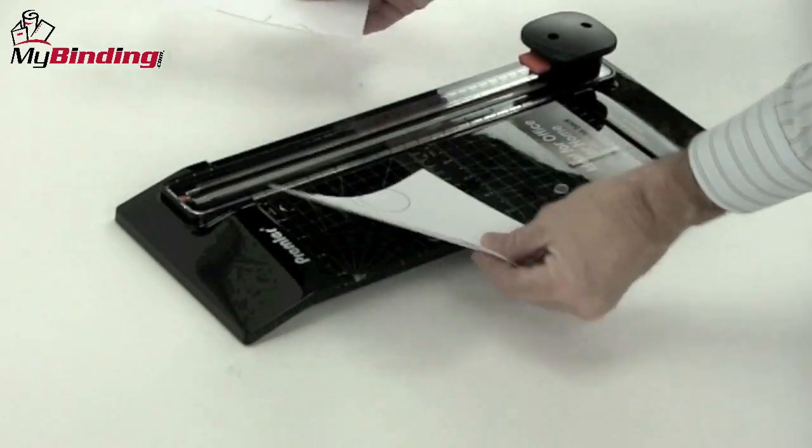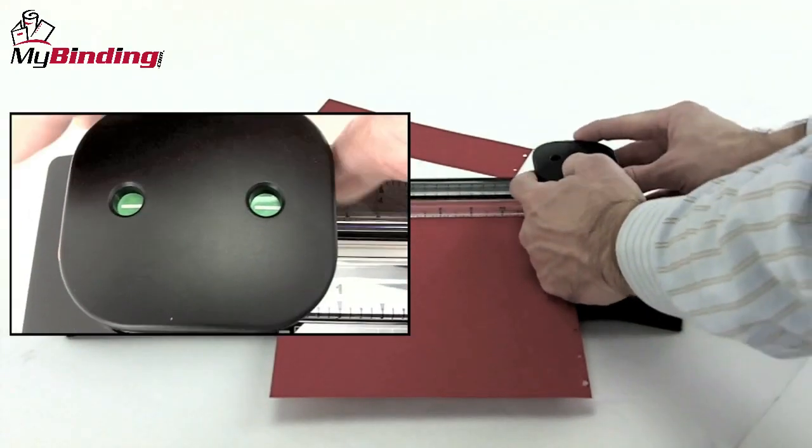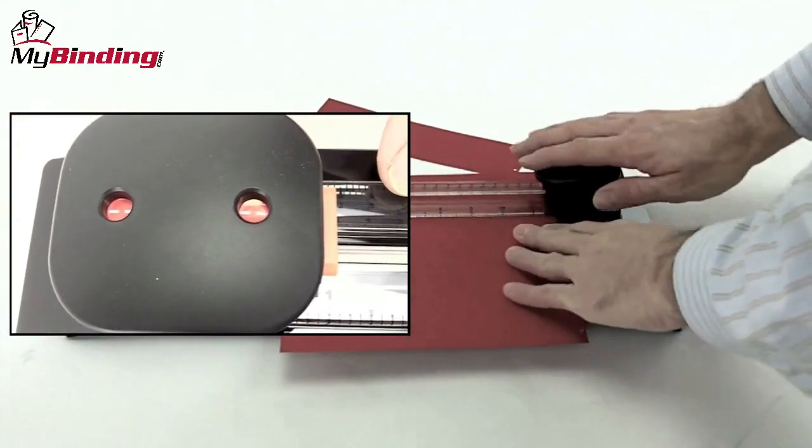Another great selling point of this trimmer is not only that it cuts well but it also perforates. A simple switch of the button changes the roller head and you've got a two-in-one machine.